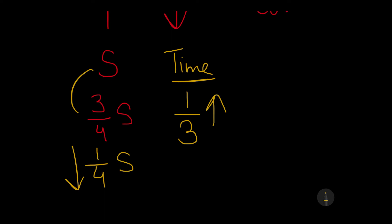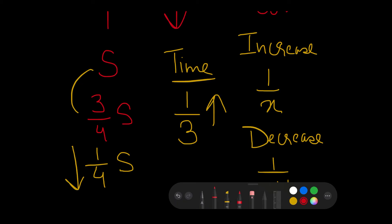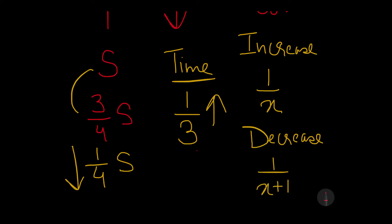The generalized formula says that out of the two parameters which we are considering, if there is an increase in a particular parameter, let's say if the increase is 1/x, then it should result into the decrease of the other parameter by 1/(x+1). If we check our previous example, we know that the time is increasing by 1/3, so this will result into the decrease of the speed by 1/4, that is 1/(3+1). This generalized format helps you find out things at an easier pace.